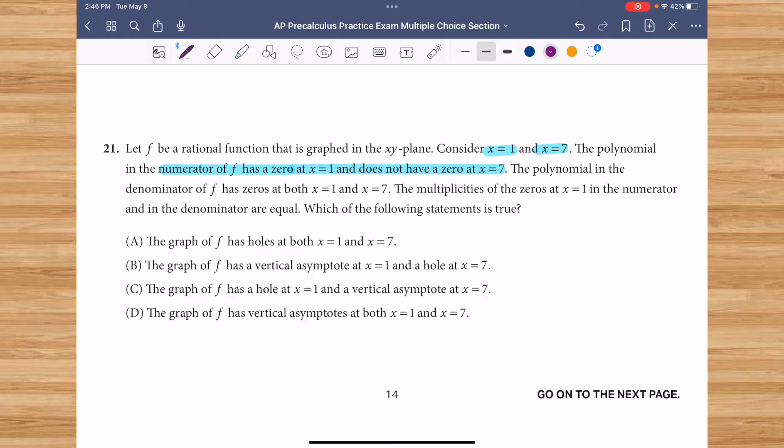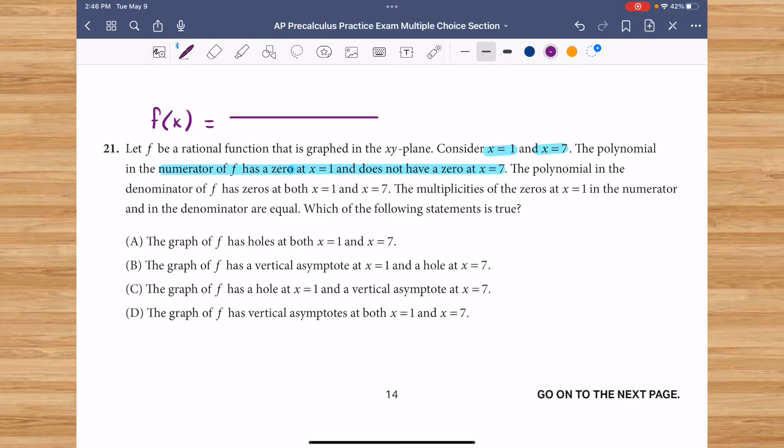Before I get too much further, we're talking about this f of x function that is a rational function, meaning it is built by two polynomials in both the numerator and denominator.